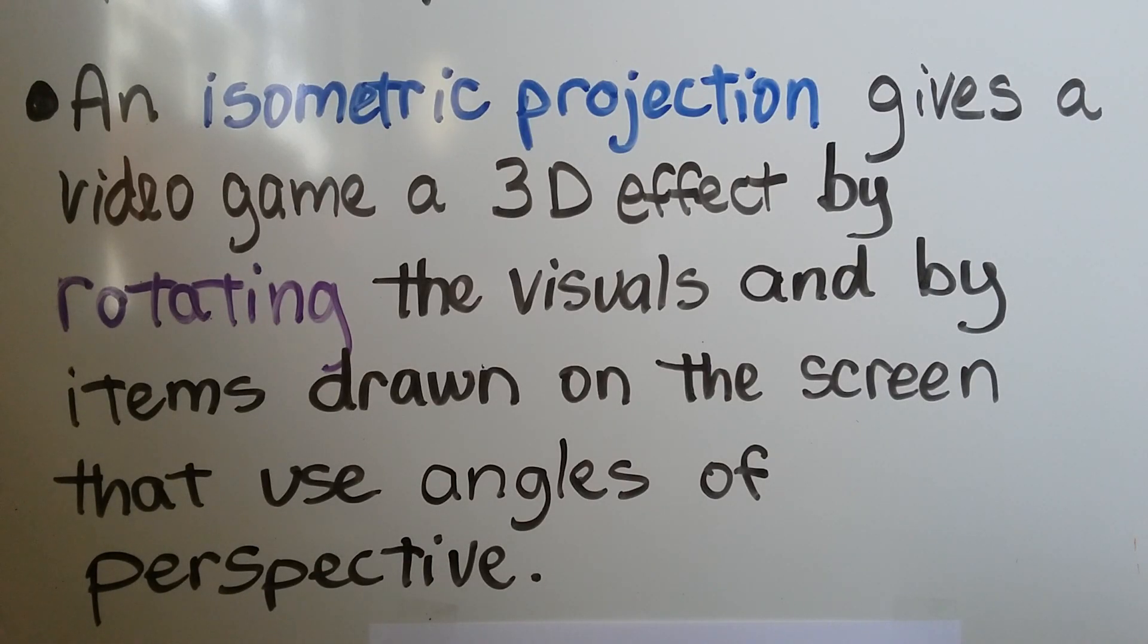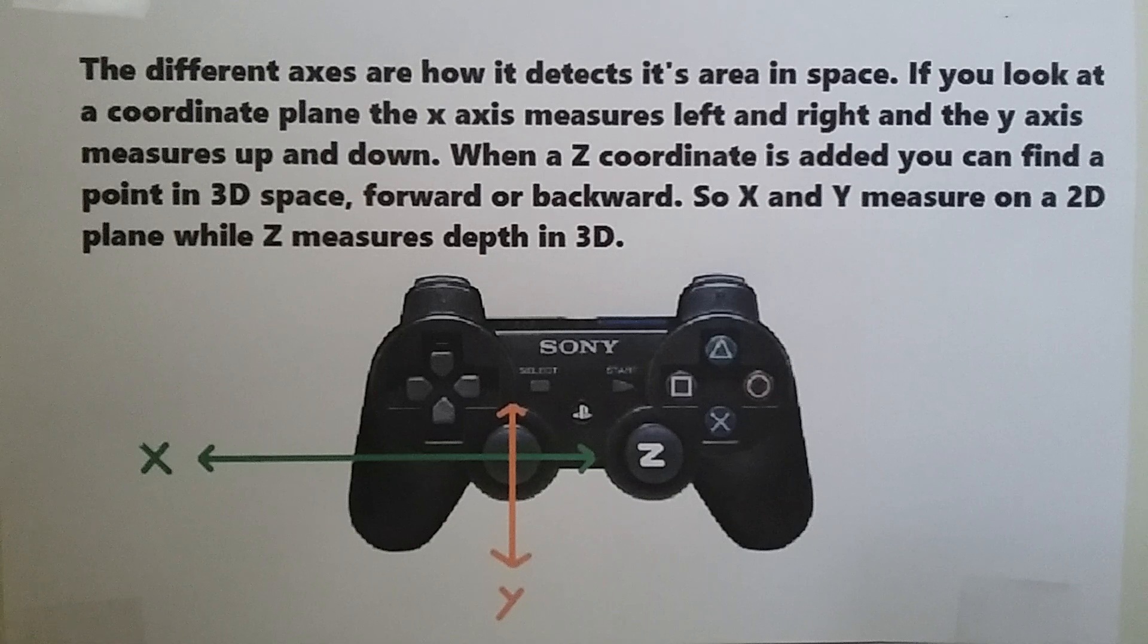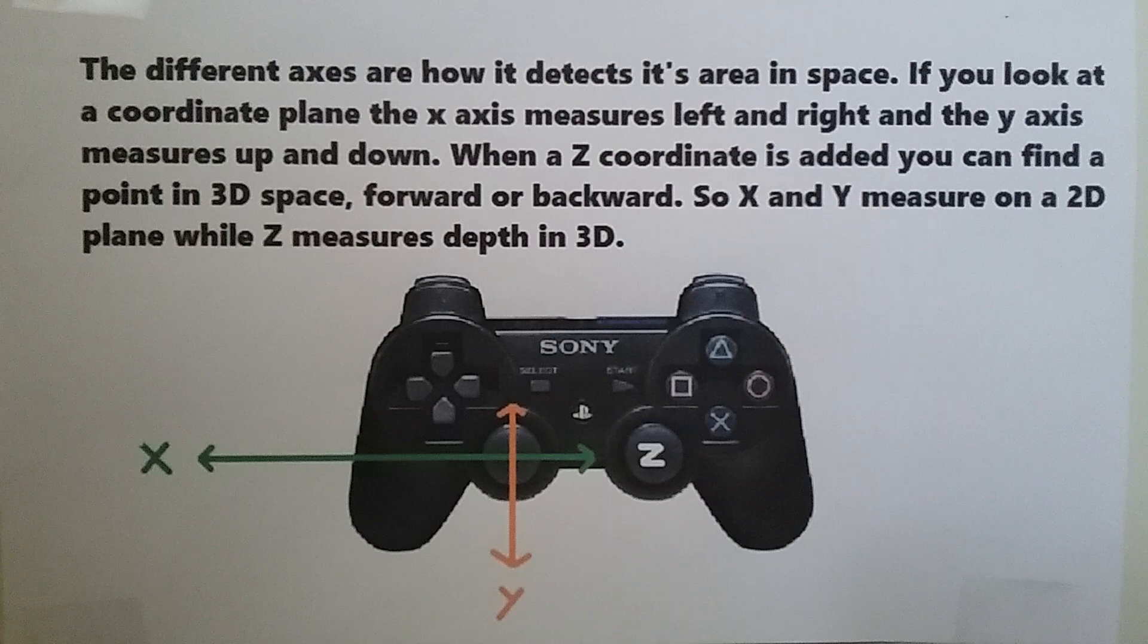An isometric projection gives a video game a 3D effect by rotating the visuals and by items drawn on the screen that use angles of perspective. If you've ever played with a game controller on a PS3 or a game deck, the different axes are how it detects its area in space. If you look at a coordinate plane, the x-axis measures left and right and the y-axis measures up and down. When a z-coordinate is added, you can find a point in 3D space forward or backward, so x and y measure on a 2D plane while z measures depth in 3D.